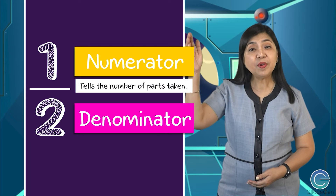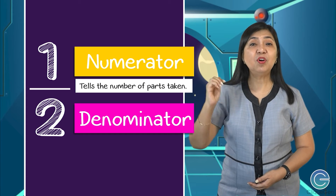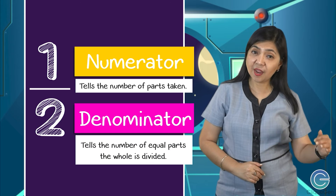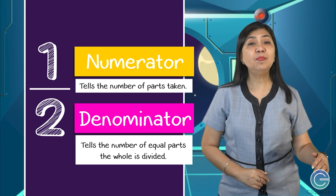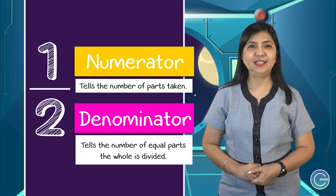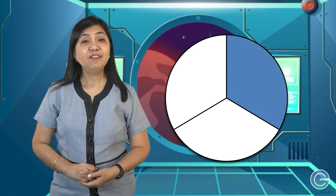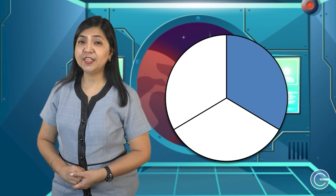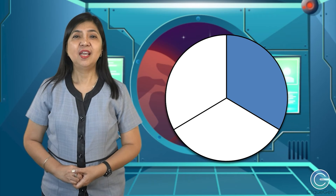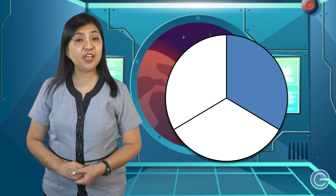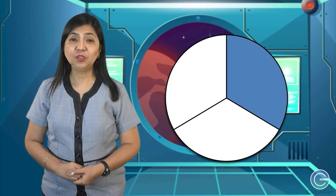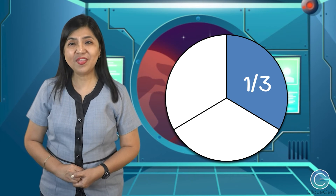The numerator tells the number of parts taken, while the denominator tells the number of equal parts the whole is divided into. If the circle is divided into three equal parts and one part is shaded, the shaded part is one third.